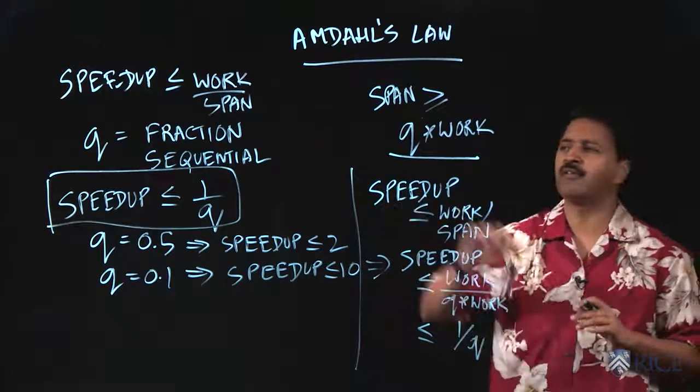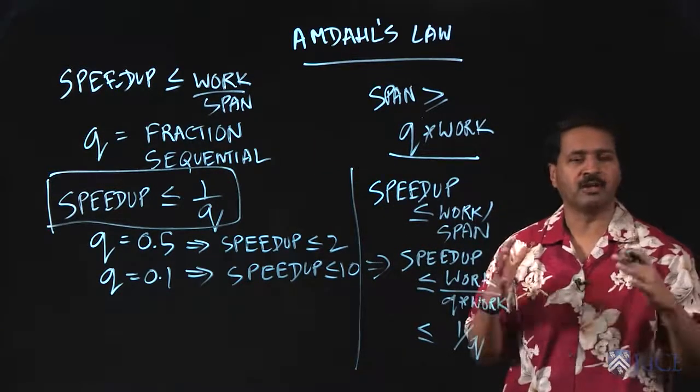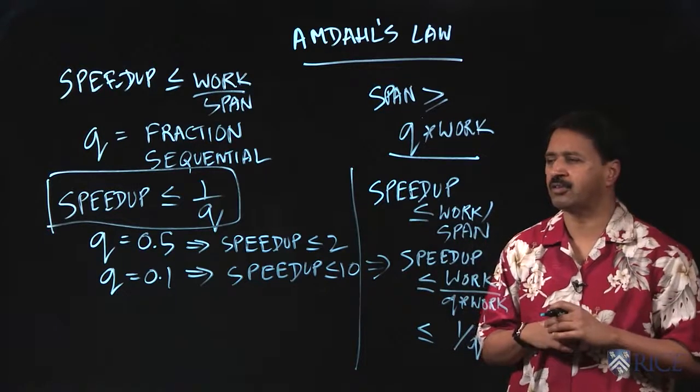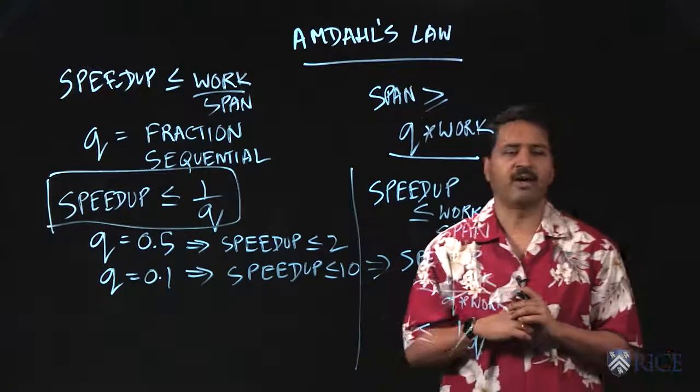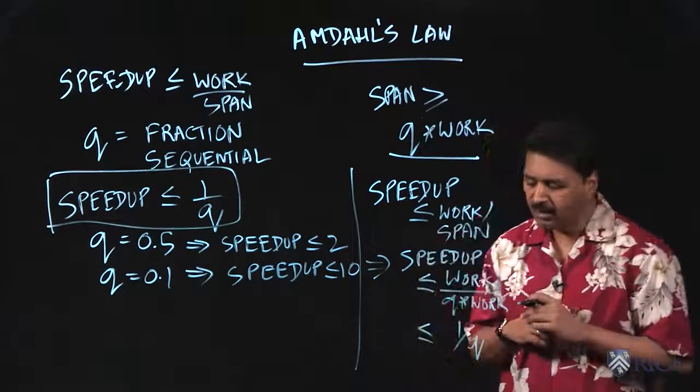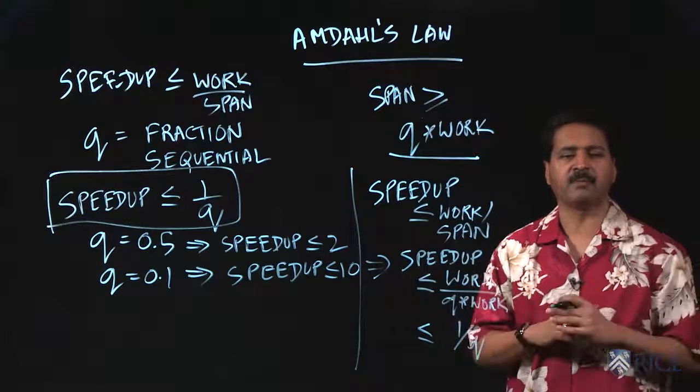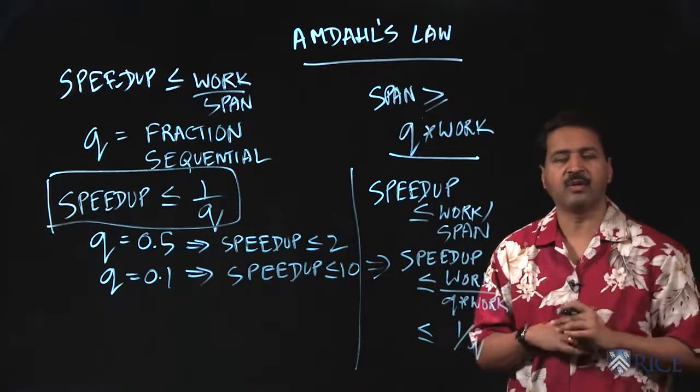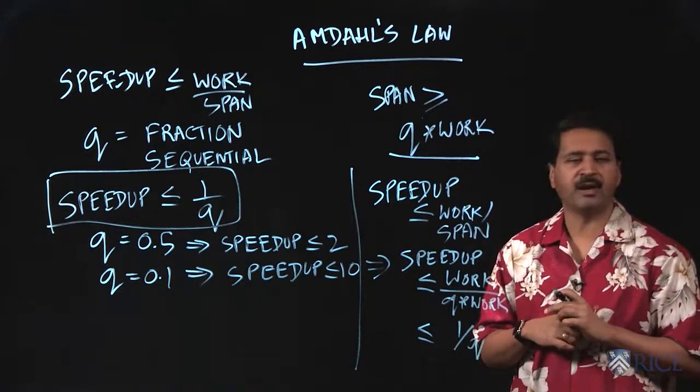And in fact, the bound that you have of work over span is a much more precise bound that takes into account the entire computation graph, but can also lead you to the conclusion for Amdahl's law. So what you see is that by reasoning about the parallelism in a program and also the sequential part of the program, we can come up with the bound on the speedup.